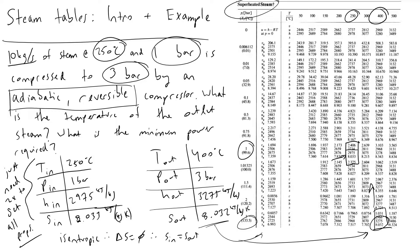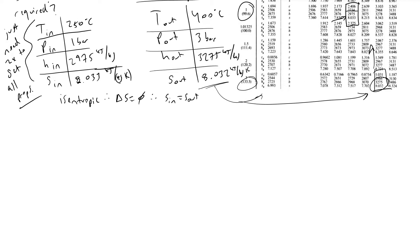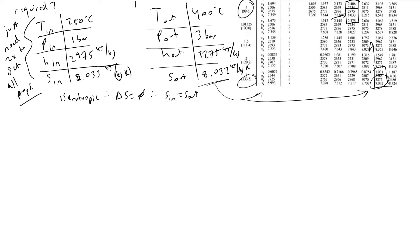Moving on, if we wanted to determine what the minimum power requirement is for our compressor, what we do is we will note how we can determine the ideal work done over time. I abbreviated W dot ideal is equal to F, the mass flow rate, times H out minus H in.